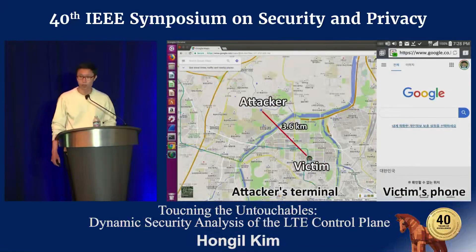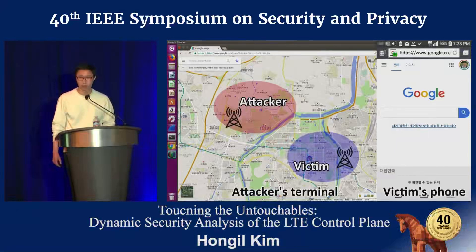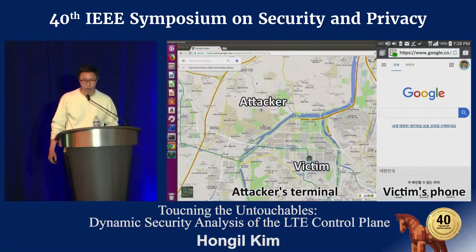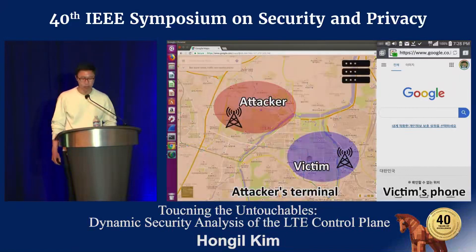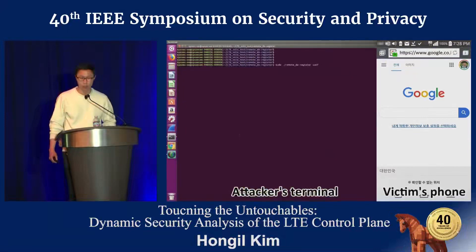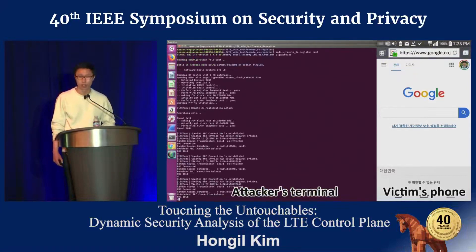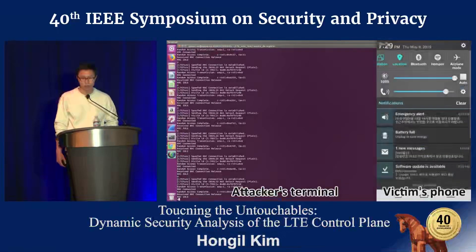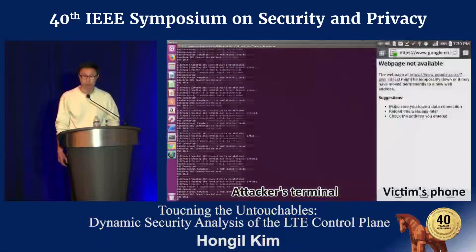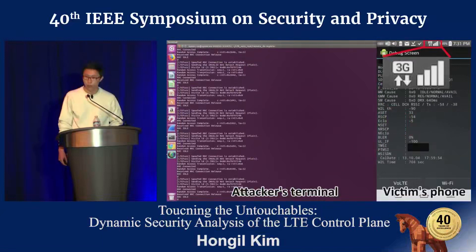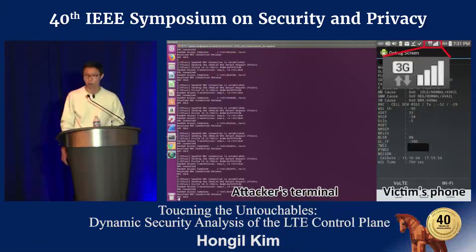In the demo, the attacker and victim are 3.6 kilometers apart, connected to different eNodeBs but within the same MME pool area, which is known to be very large. Right after the attack starts, the victim UE is disconnected from the network. Whatever the victim UE tries, it fails to reconnect to LTE. After some time, the victim UE downgrades to 3G, which is known to be much less secure than LTE.